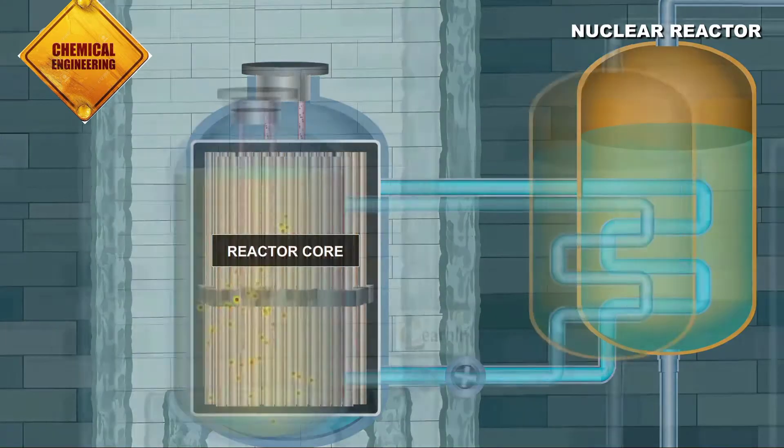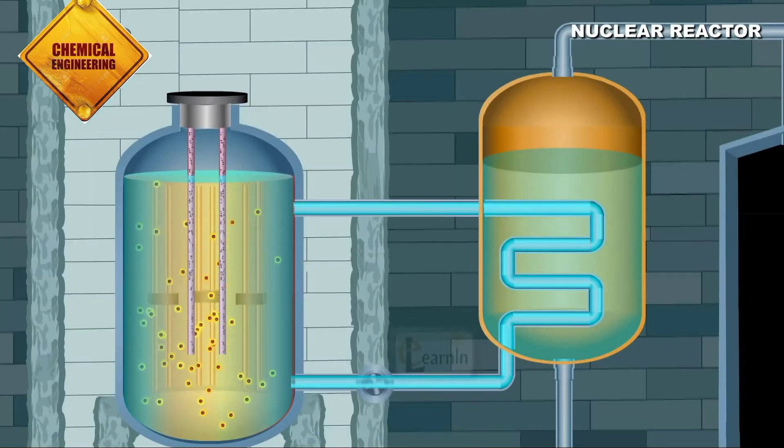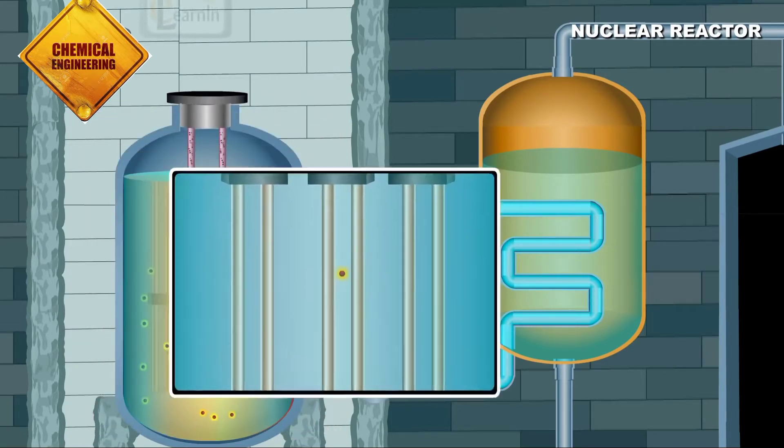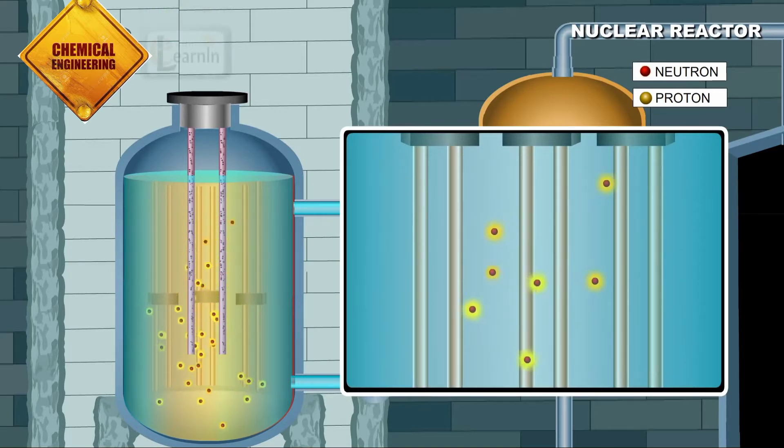These fuel elements are normally immersed in water which acts as a moderator. The objective of a moderator is to slow down the energy neutrons in nuclear reactor which are produced during the nuclear fission process by the fuel elements.